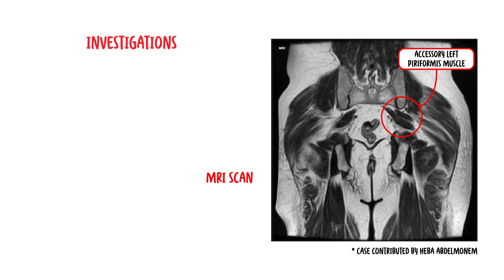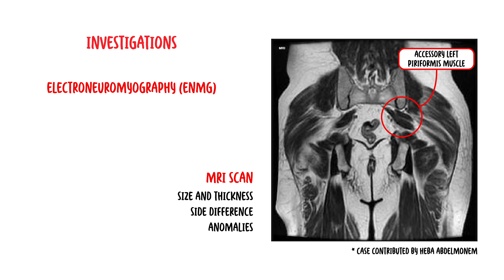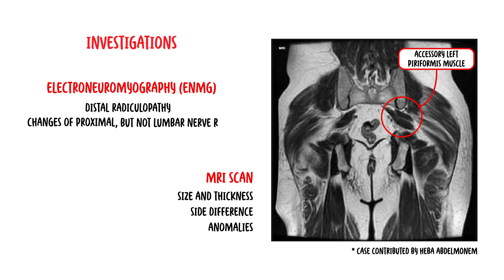For investigations, an MRI scan can be ordered and can demonstrate the size and thickness of the piriformis muscle, differences between the left and right sides, and any anatomical anomalies. An electroneuromyography examination may demonstrate distal radiculopathy or changes of proximal but not lumbar nerve root pathology, which can help differentiate between lumbosacral pathology and piriformis syndrome.